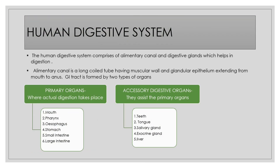Moving to the various parts of the GIT, the human digestive system comprises two major kinds of organs. The first, primary organs, include the mouth, pharynx, esophagus, stomach, small intestine and large intestine. The accessory digestive organs assist the primary organs; they are not the major ones, but digestion cannot be imagined without them. They include teeth, tongue, salivary glands, exocrine glands, liver and lots more.